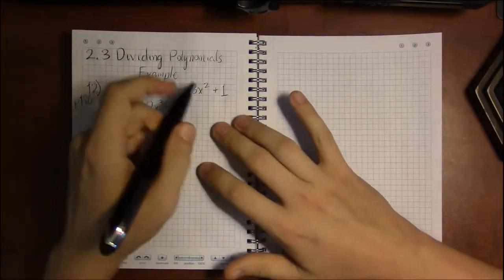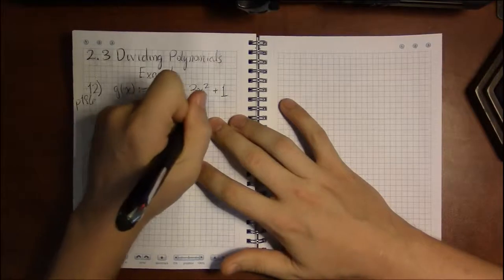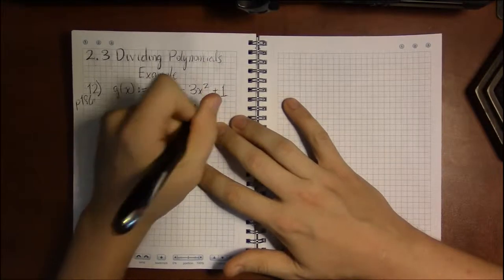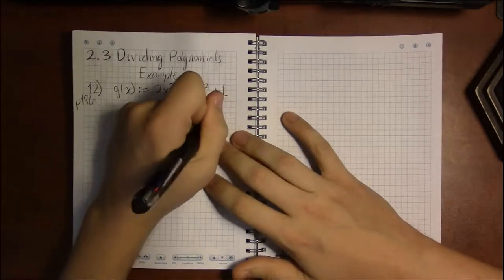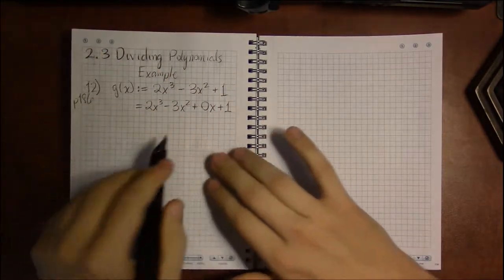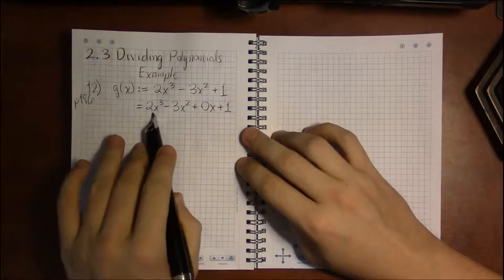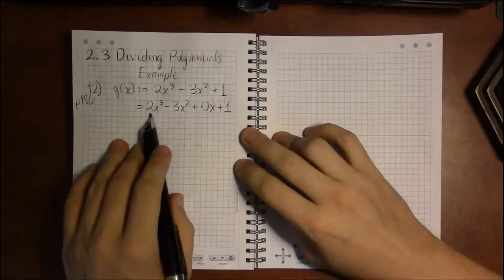So 2x cubed minus 3x squared, and we're just going to put 0 as the coefficient on x. And we haven't changed anything, but we have all the coefficients we need to do synthetic division now.